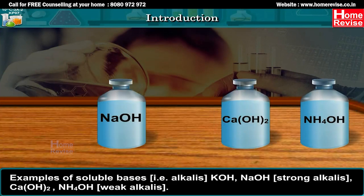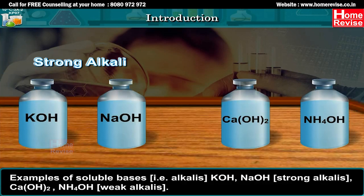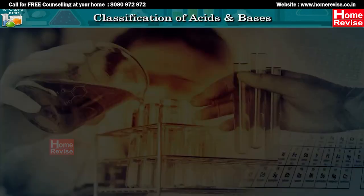Examples of soluble bases (i.e., alkalis): KOH and NaOH are strong alkalis; Ca(OH)2 and NH4OH are weak alkalis.